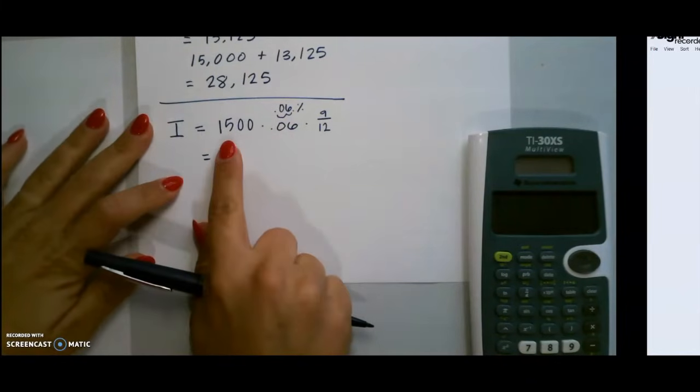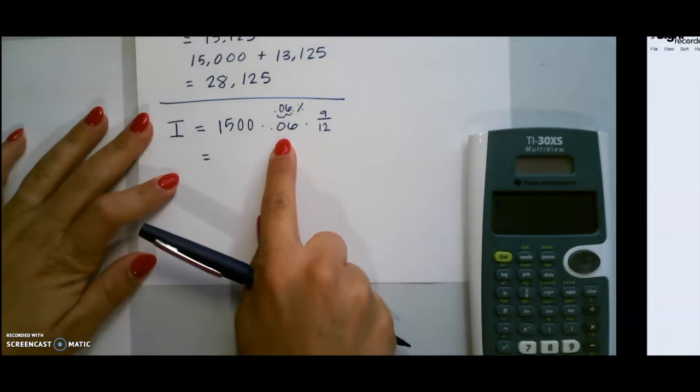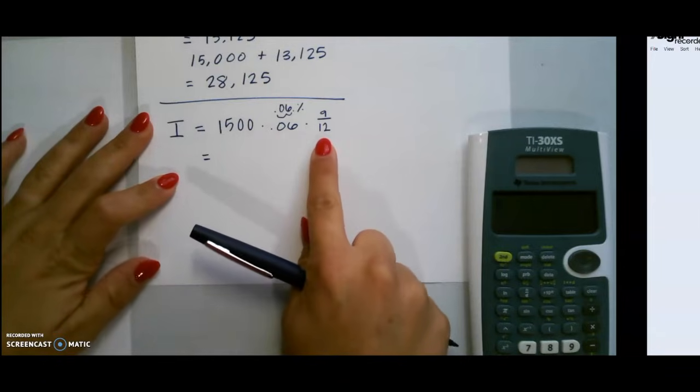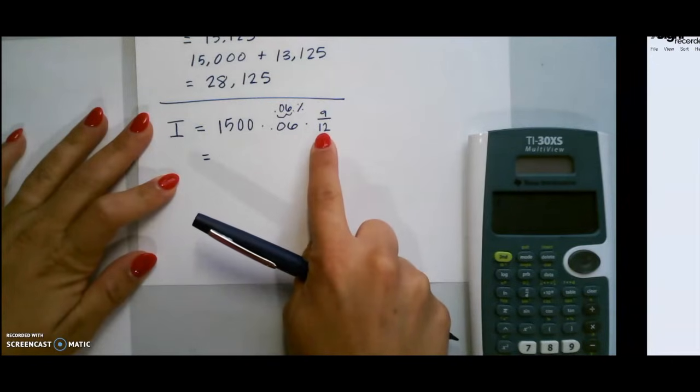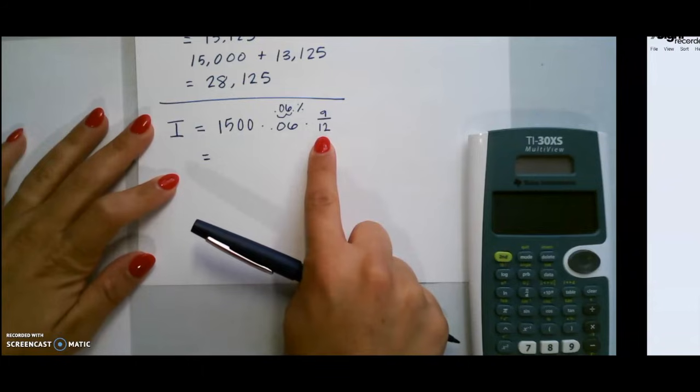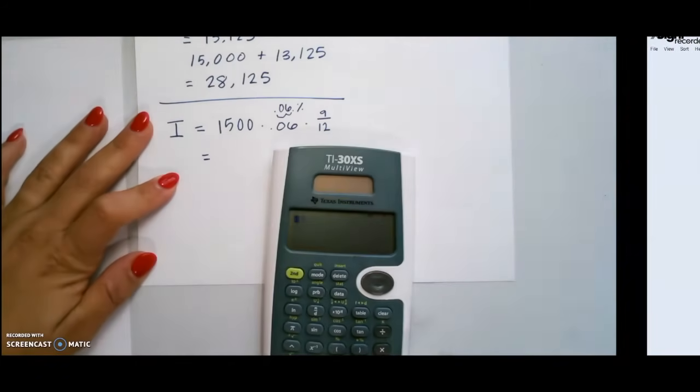So for this one, $1,500 is our principal amount, 6% as a decimal is .06, and here we have a fraction. So since we were talking about 9 months, there are 12 months total in the year. So we just simply put 9 over 12 to multiply that for our terms of years. So then we plug this into our calculator.